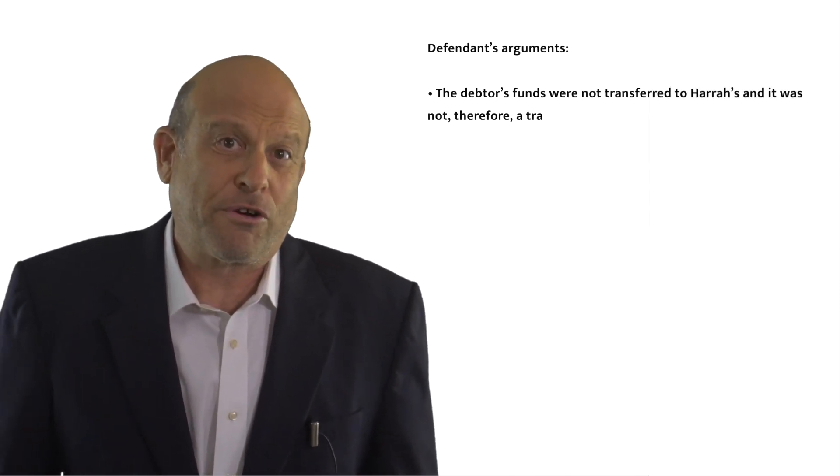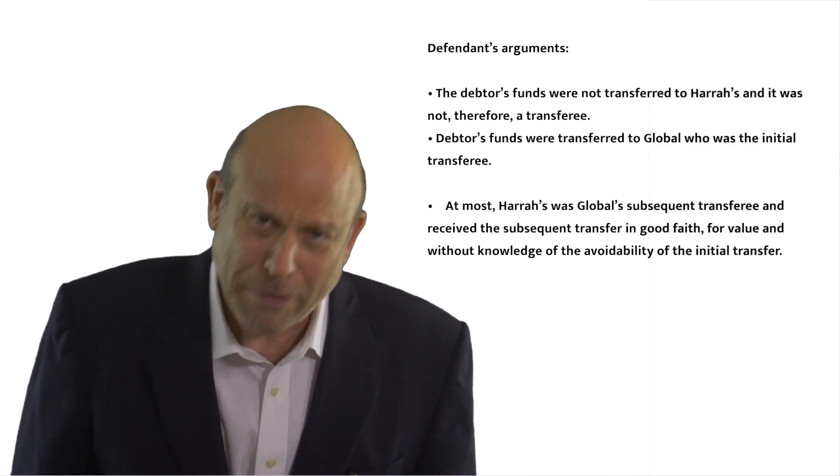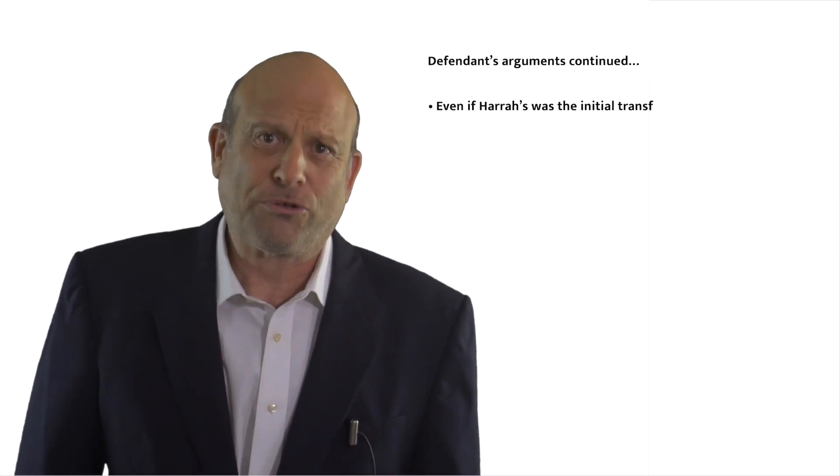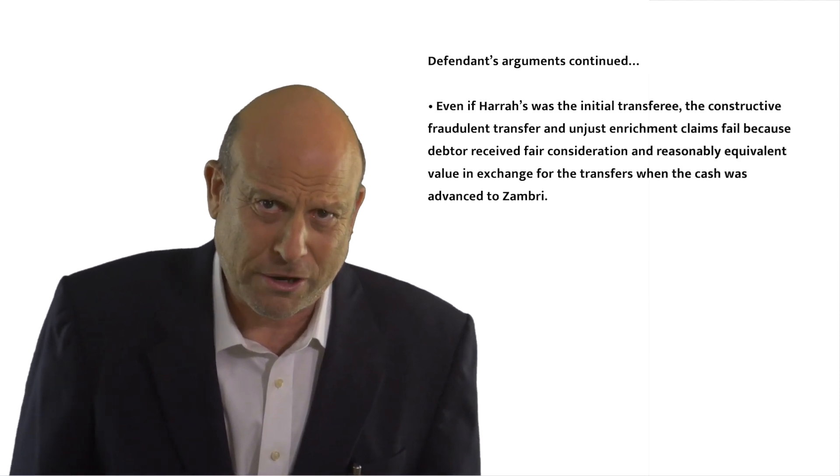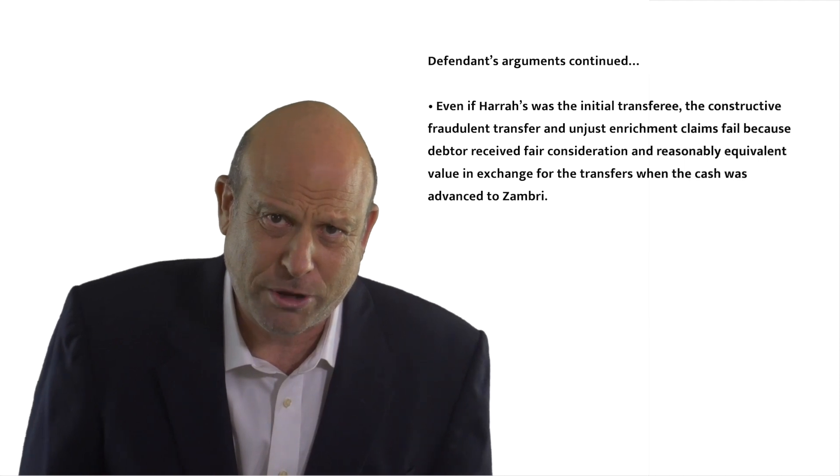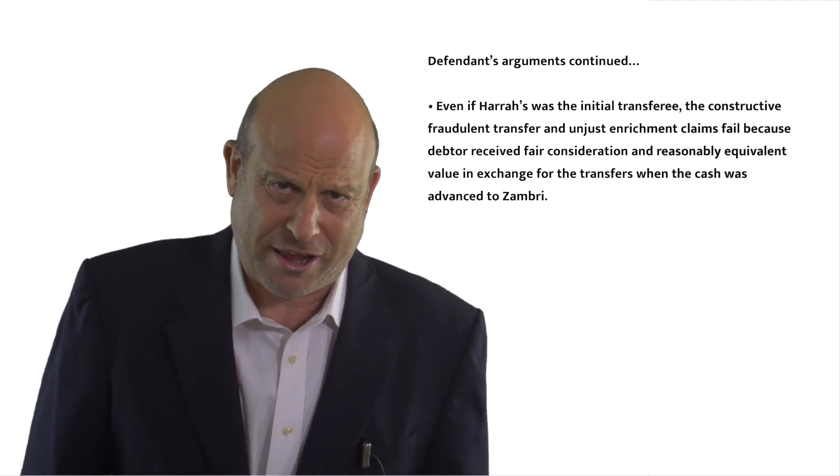Harrah's first pointed the finger at Global, the debit card processor. Global's function was to confirm the availability of funds, get authorization from the card issuer, communicate to Harrah's that it could collect money from the bank. It would then get money from the bank and the next day wire the money to Harrah's. Harrah's argued that it's Global that should be sued. Global got the money first.